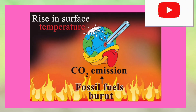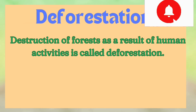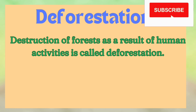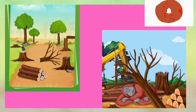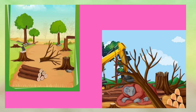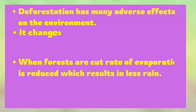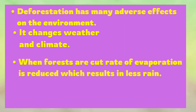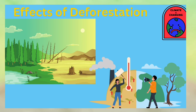The next cause of climate change is deforestation. Destruction of forests as a result of human activities is called deforestation. Deforestation can directly lead to biodiversity loss when animal species that live in the trees no longer have their habitat, cannot relocate, and therefore become extinct. When forests are cut, the rate of evaporation is reduced, resulting in less rain. Trees absorb and store carbon dioxide; if forests are cleared or disturbed, they release carbon dioxide and other greenhouse gases. Forest loss and damage is the cause of around 10% of global warming.